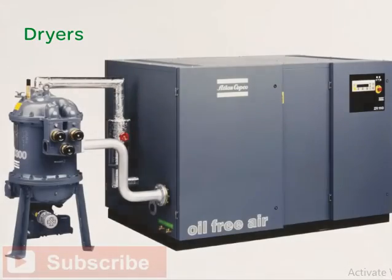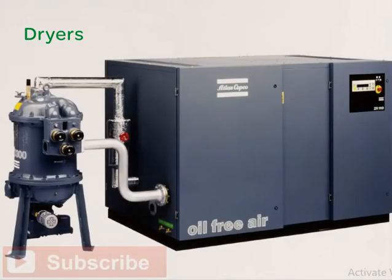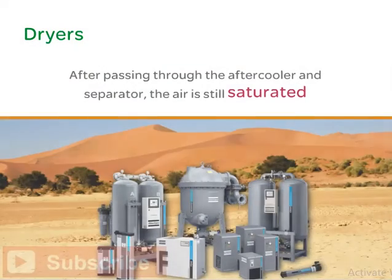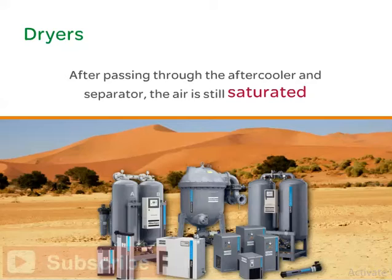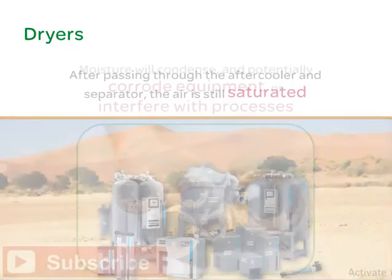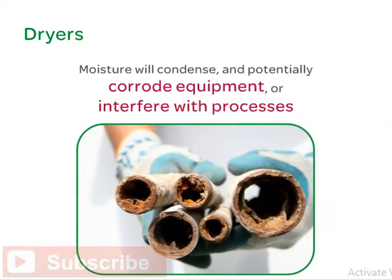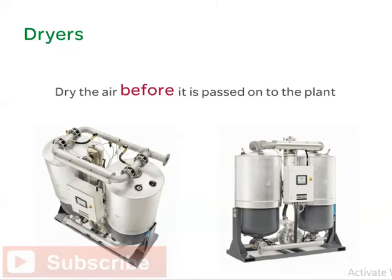Let's discuss dryers now. After passing through the after cooler and separator, the air is still saturated. If this air is delivered to the plant as is, moisture will condense as it cools further and potentially corrode equipment or interfere with processes. Therefore, we need to dry the air before it is passed on to the plant. Dryers are used for this.